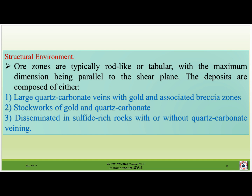Ore zones are typically rod-like or tabular, with the maximum dimensions being parallel to the shear plane. The deposits are composed of either: number one, large quartz-carbonate veins with gold and associated breccia zones; number two, stockworks of gold and quartz-carbonate; or number three, disseminated sulfide-rich rocks with or without quartz-carbonate veining.